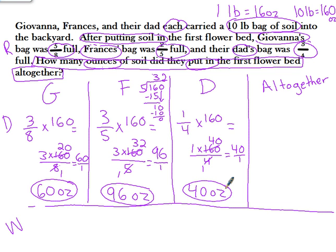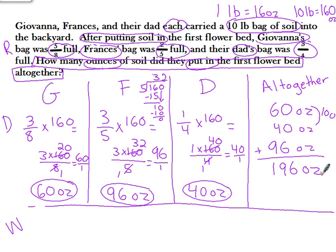All together means I have to add them. So I need to make sure I add my sixty ounces, my ninety-six ounces, and my forty ounces. Now you'll notice I put them together in a different way. I didn't line them up from Giovanni, Francis, then Dad. I did a little bit different. And if you look, your brain will think in tens. If I put this six and a four together, it makes tens. So sixty and forty together will make a hundred. If I know this is a hundred, then a hundred plus ninety-six more gives me a hundred and ninety-six ounces.